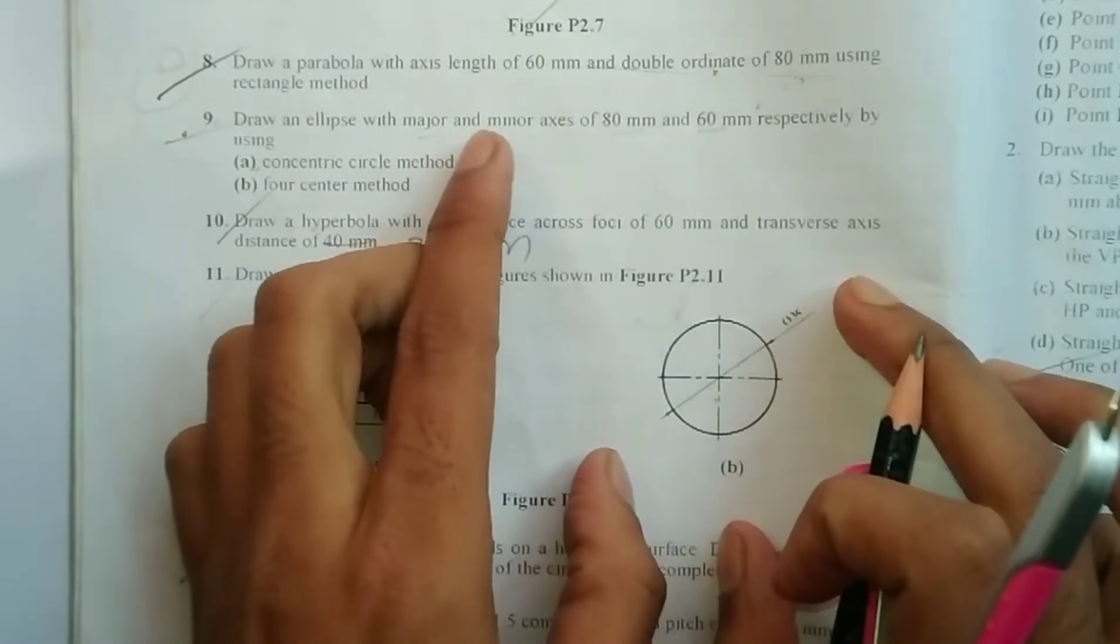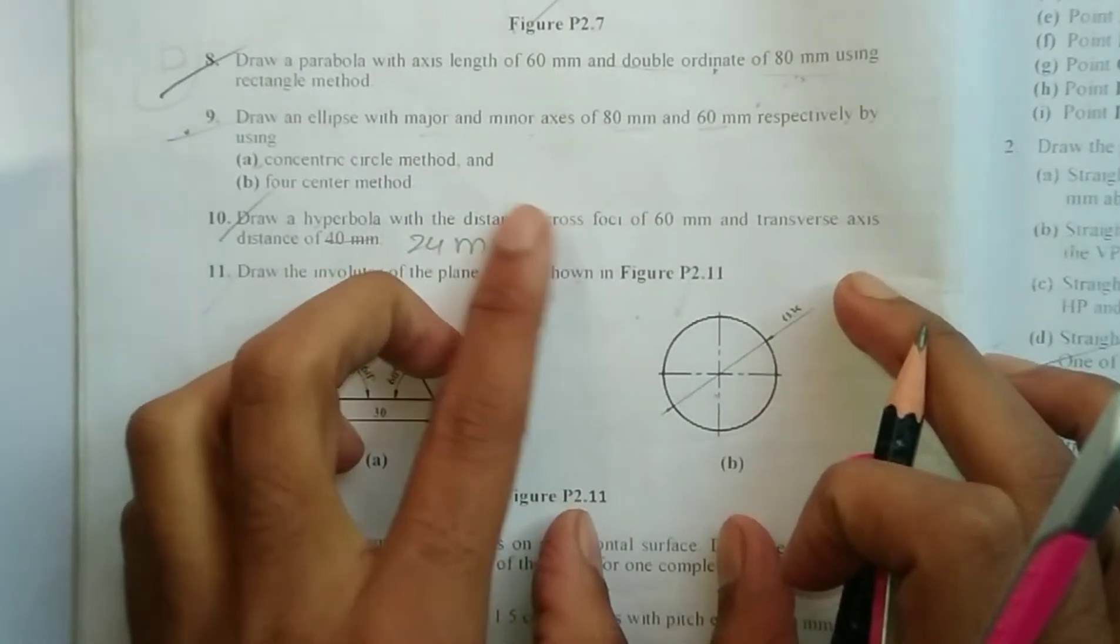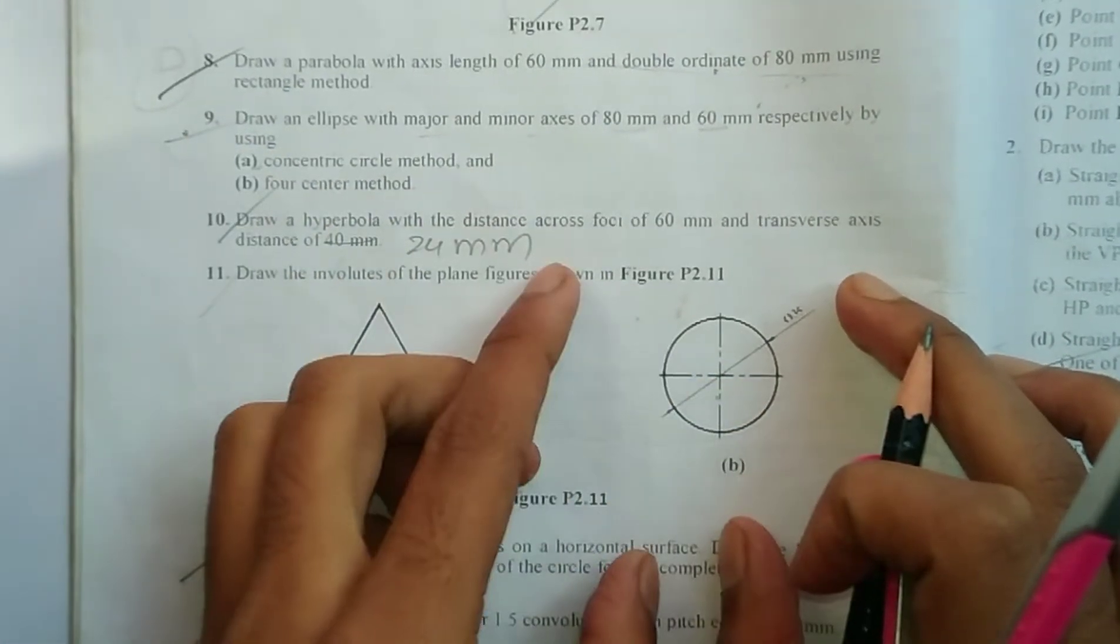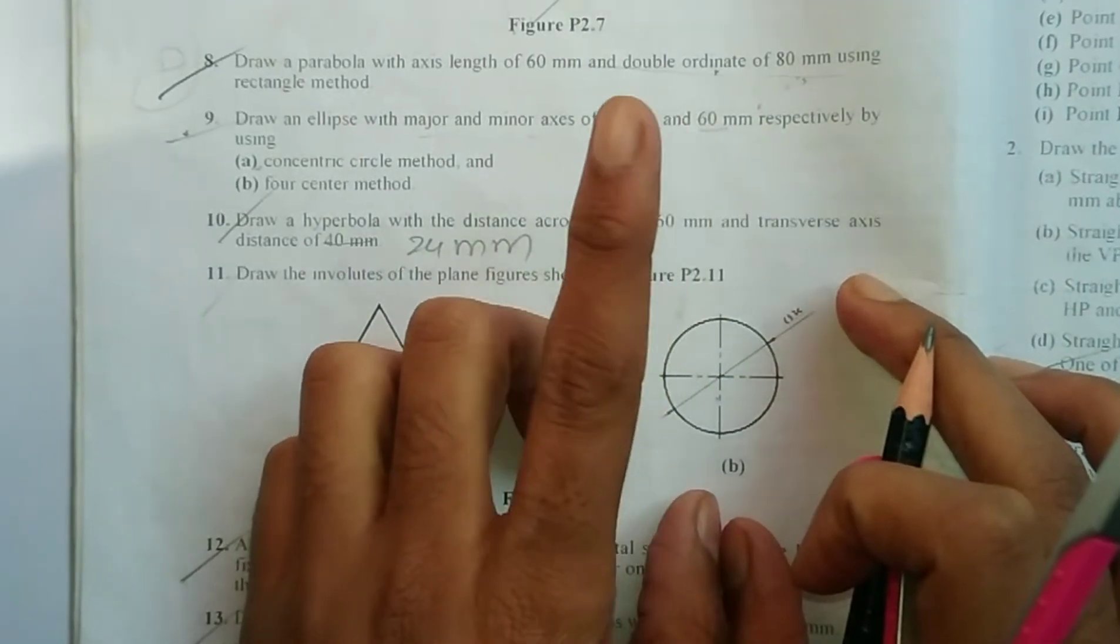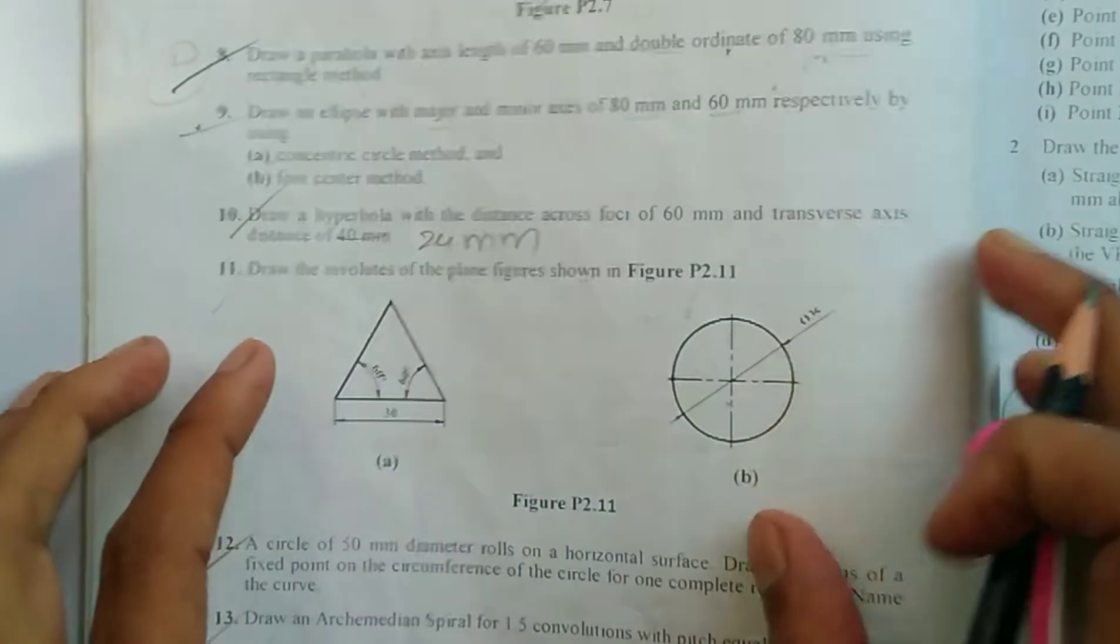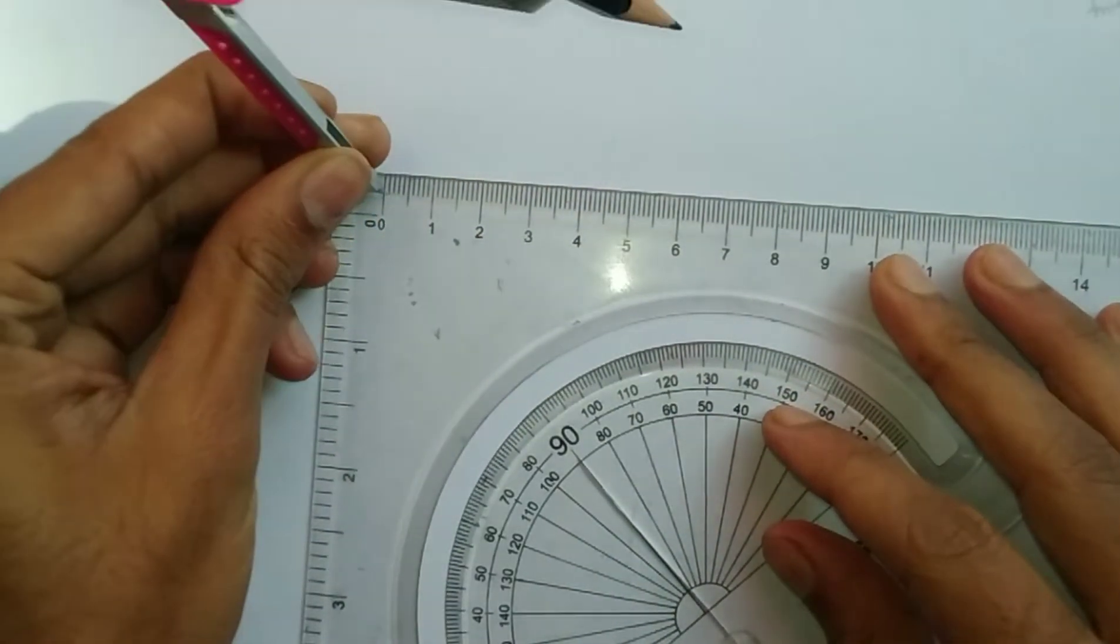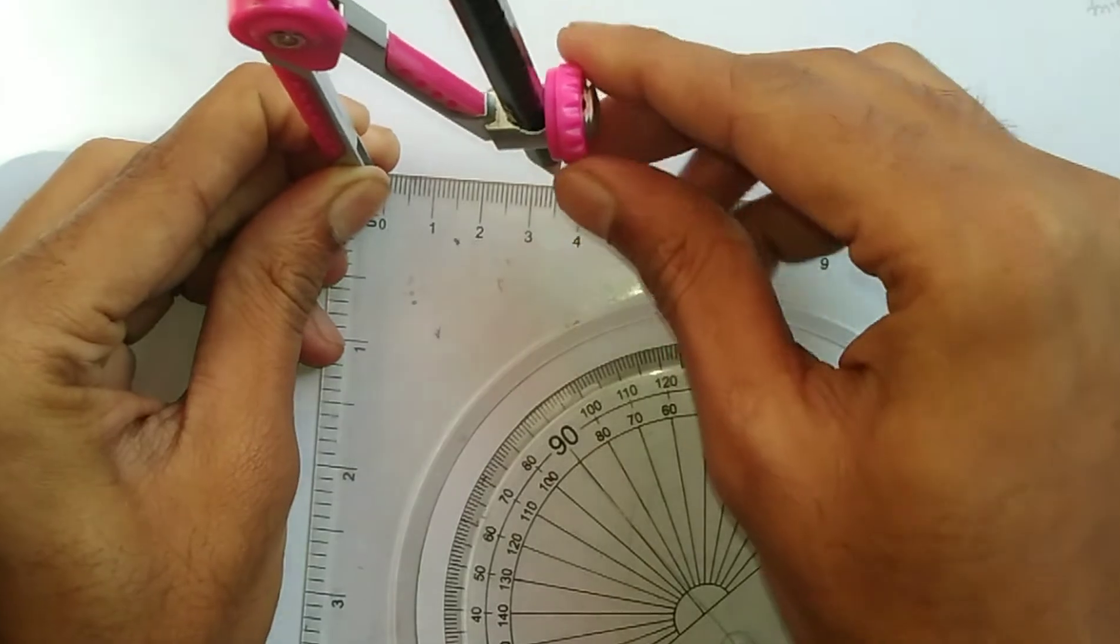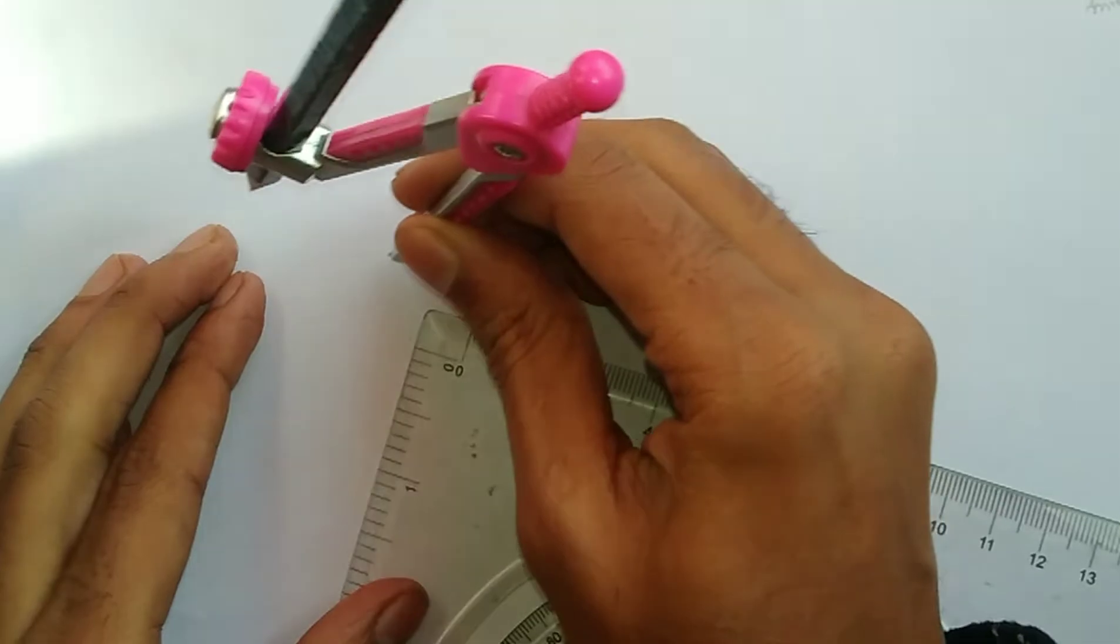The major axis is this distance and this particular distance is the minor axis. In this question, the major axis is 80 mm and the minor axis is 60 mm. We'll draw concentric circles. The radius here is 40 mm and here it is 30 mm.